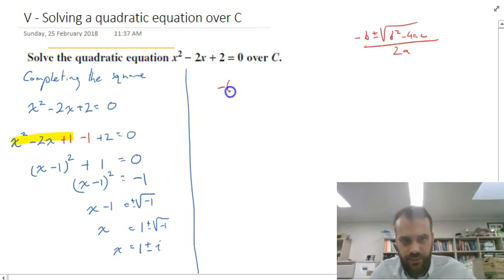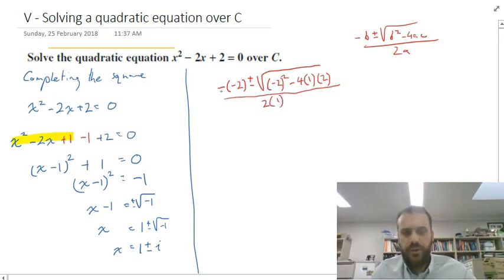So if I do that, it's going to be negative negative 2 plus or minus the square root of negative 2 squared minus 4 times 1 times 2 all over 2 times 1. All right, so work through this a little bit.